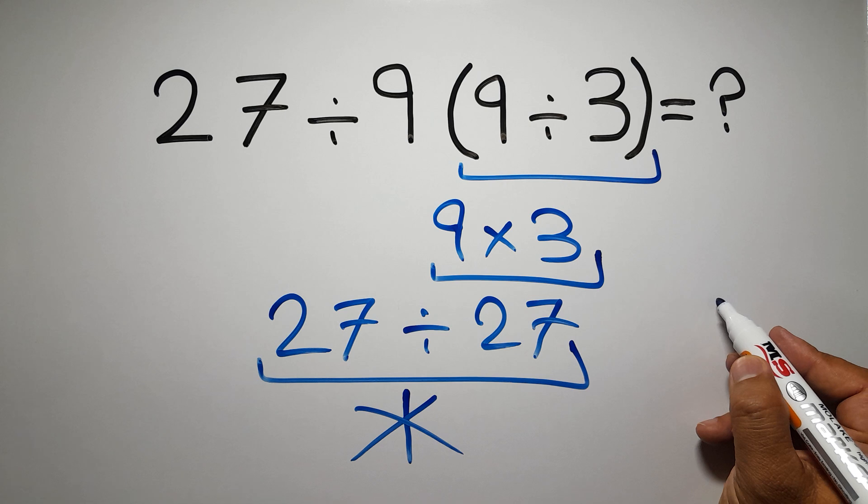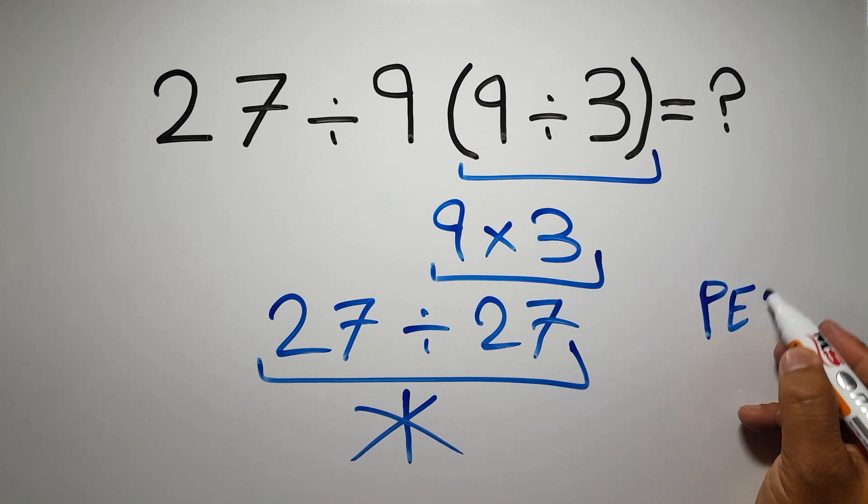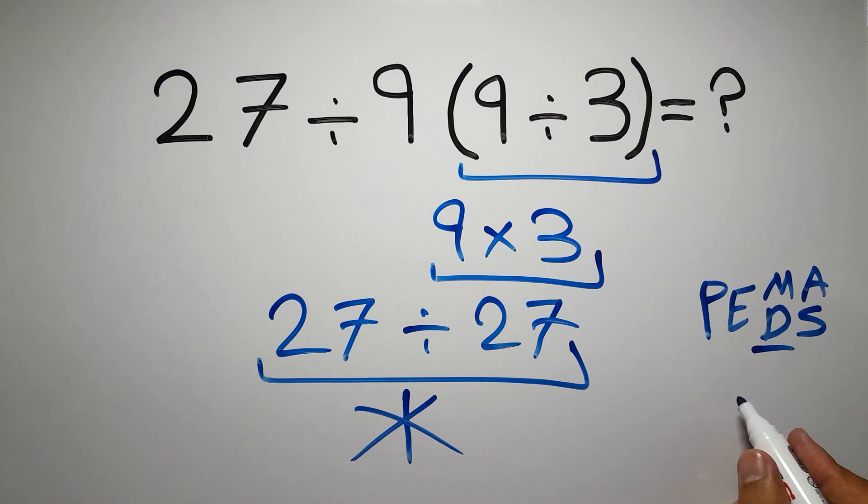Because according to the order of operations, first we have to do parentheses, then exponents, then multiplication or division, and finally addition or subtraction. Remember that multiplication and division have equal priority, and we have to work from left to right, and the same applies to addition and subtraction.